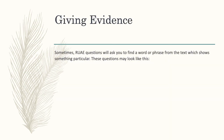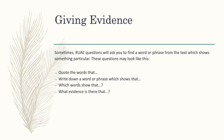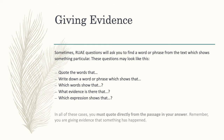On to giving evidence. Sometimes RUI questions will ask you to find a word or phrase from the text which shows something in particular. These questions can look like: 'quote the words that...', 'write down a word or phrase which shows that...', 'which word shows that?', 'what evidence is there that?', or 'which expression shows that?' All of these are asking you to quote directly from the text. So you should write your answer exactly as it appears in the text for giving evidence questions — it's okay and you must quote directly from the passage.